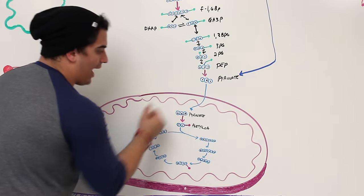PEP can then go to 2-phosphoglycerate, 3-phosphoglycerate, 1,3-bisphosphoglycerate, back up to GA3P, and back up to fructose 1,6-bisphosphate. But at fructose 1,6-bisphosphate, we're stuck again. Thankfully, there's another enzyme: fructose 1,6-bisphosphatase. This enzyme cleaves the phosphate off the one-carbon position of fructose 1,6-bisphosphate, releasing a phosphate.